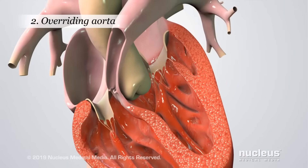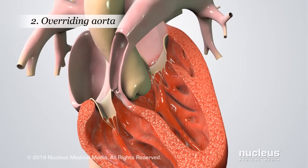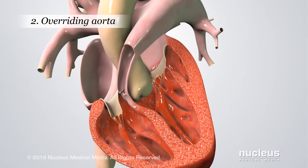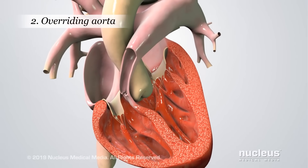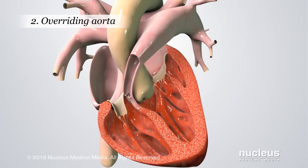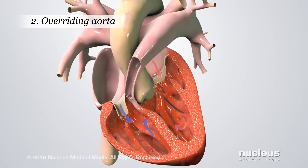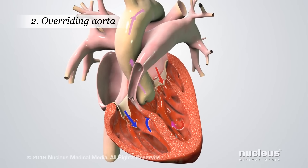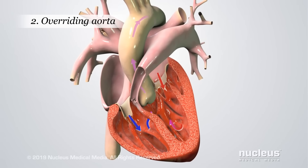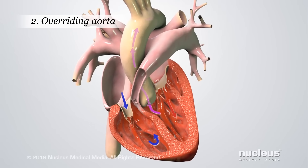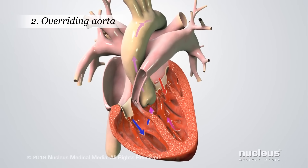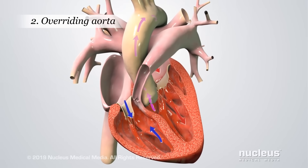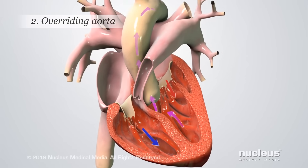An overriding aorta means the aorta is shifted slightly from its usual location on the heart. It sits right over the ventricular septal defect. This allows blood from both ventricles to flow through the aorta. As a result, some oxygen-poor blood may flow to the body.